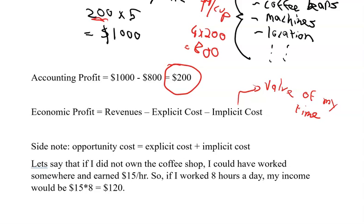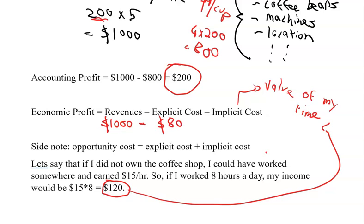So if that's the case, then my implicit cost is I'm giving up this amount. This is the value of my time that I gave up in order to operate this business. So my economic profit would be the same revenues, $1,000. My explicit cost is going to be $800. My implicit cost is going to be $120. So then my economic profit is going to be $80. This is telling us that even after accounting for the value of my time, I'm making $80 of economic profit.